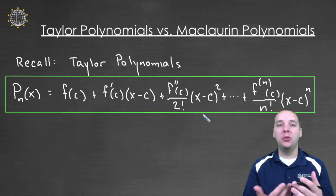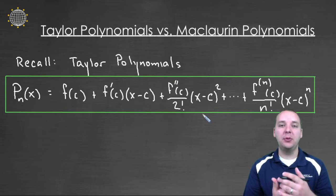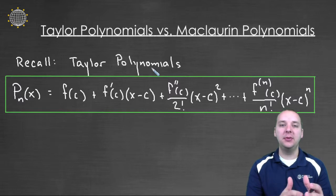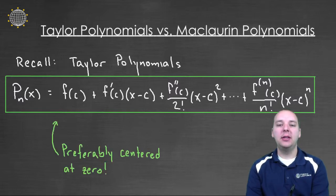In fact, it's no coincidence that many of our examples have been centered at 0, if for simple algebra, for nothing else. And it turns out we have so many of these Taylor polynomials that are centered at 0, we give them their own special name. That's what leads to this idea of a Maclaurin polynomial. These guys are preferably centered at 0, and oftentimes they are.